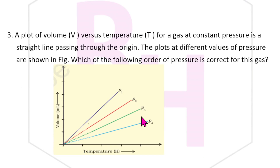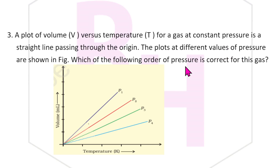Question 3: A plot of volume versus temperature T for a gas at constant pressure is a straight line passing through the origin. Plots at different values of pressure are given. Which of the following order of pressure is correct for this gas?